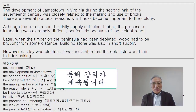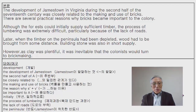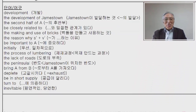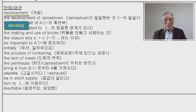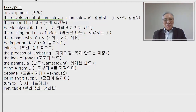이제 첫 패러그래프 내용부터 살펴보겠는데, 구체적으로 해석하기 전에 관련된 단어와 어구들이 어떤 것이 있는지 먼저 보겠습니다. 'Development' — 동사 'develop(개발하다, 발전하다)'에서 온 명사로, 주상명사 어미 '-ment'가 붙어 'development(개발)'가 되었습니다.